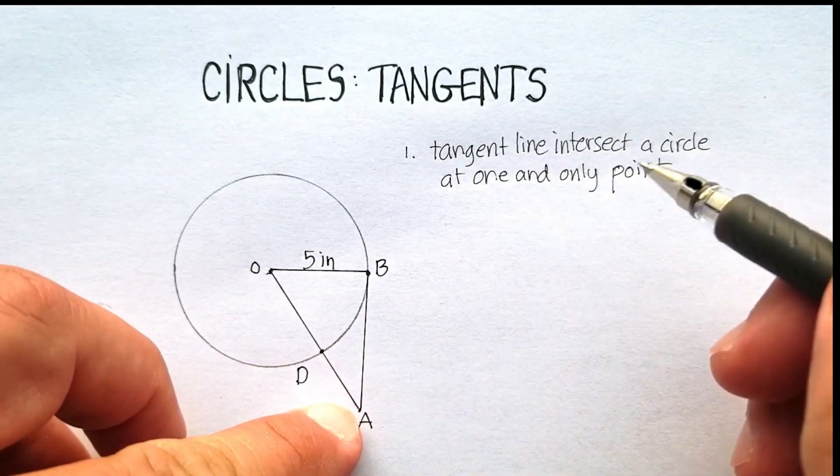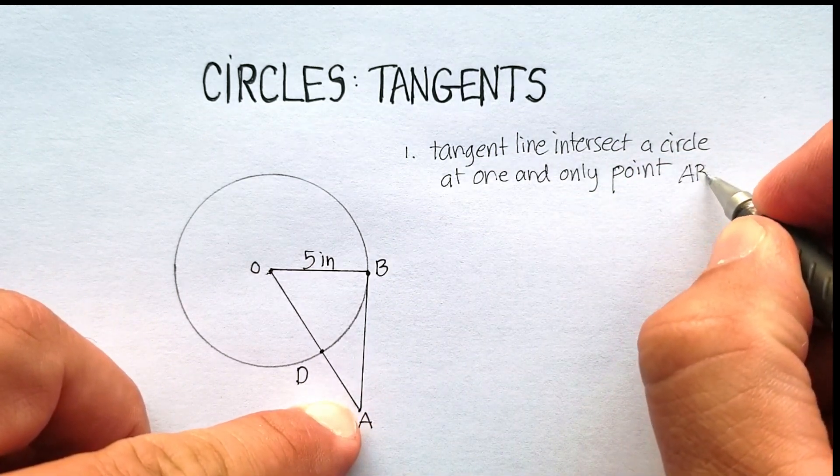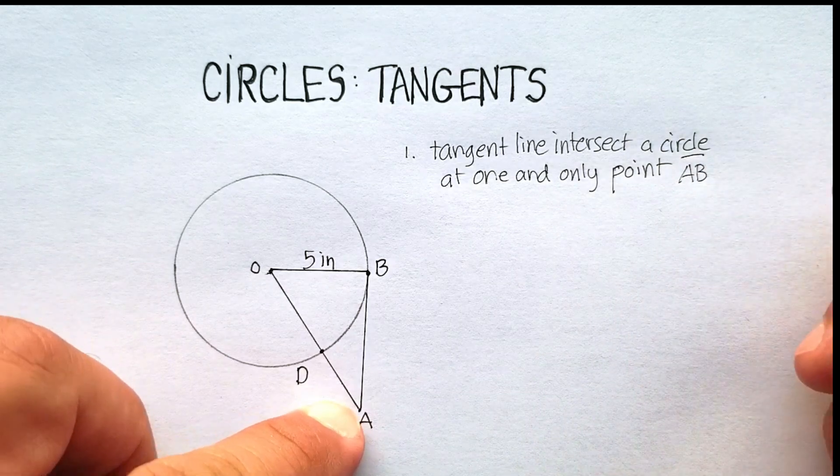So in this case, line segment in this case would be AB. Okay, so we'll just say line segment AB. Remember, you align segment by just putting a straight line with no arrows.